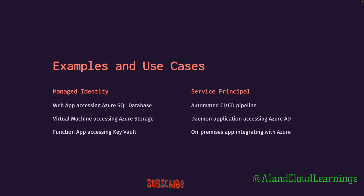Let's look at use cases of managed identity. If a web app is accessing an Azure SQL database, it needs authentication — without it, it cannot connect to that database. You can enable managed identity on that connection so it authenticates itself whenever it needs to communicate with the SQL database. Similarly, if a VM needs to access Azure Storage without any human intervention, you can enable managed identity so it authenticates itself to Azure Storage.